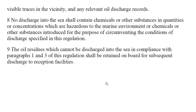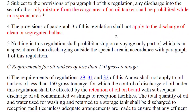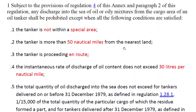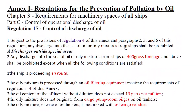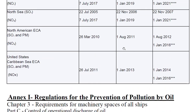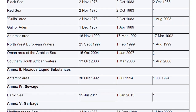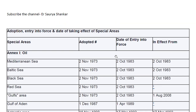So we have discussed two provisions for machinery space and cargo space for tankers — that is 150 gross tonnage and above, and less than 150 gross tonnage. We also discussed for machinery space for other ships — 400 gross tonnage and above, and less than 400 gross tonnage — and all the requirements for each. We also covered the provisions for special areas and for the Antarctic Sea, where no discharge is allowed at all.